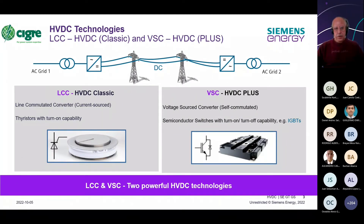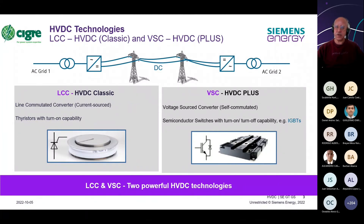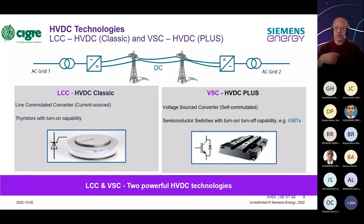The main difference between LCC and VSC stems from the switching device. In LCC technology, thyristors cannot reverse current direction, so to reverse the power direction, the voltage polarity of the converter must be reversed. In VSC, the current direction can be changed directly, allowing power to flow from station two to station one by simply reversing current direction.